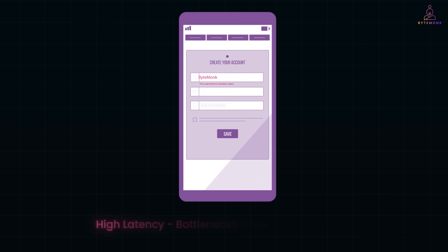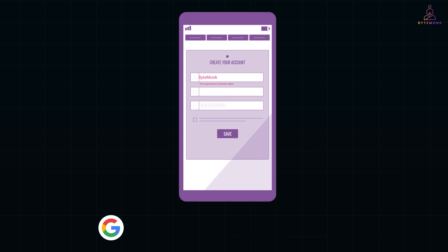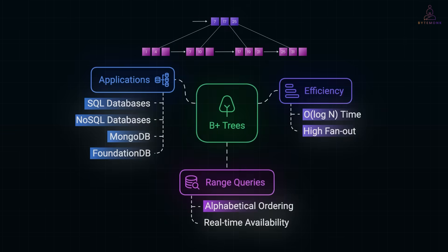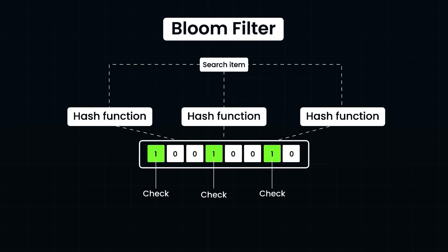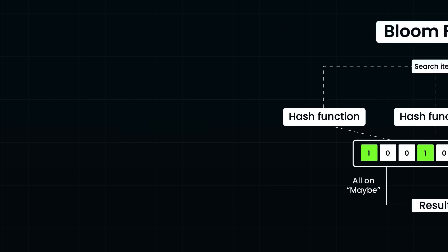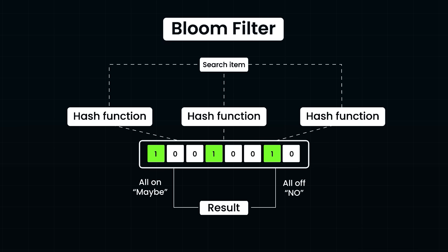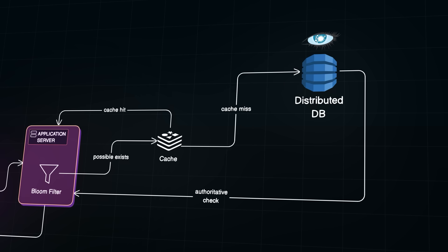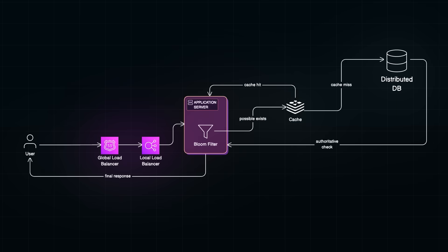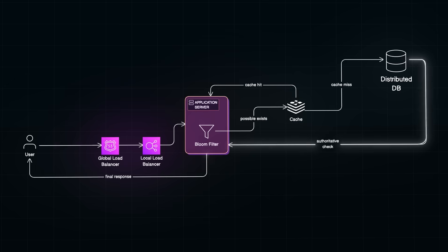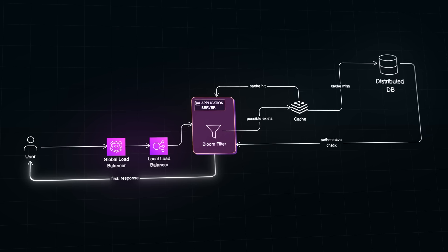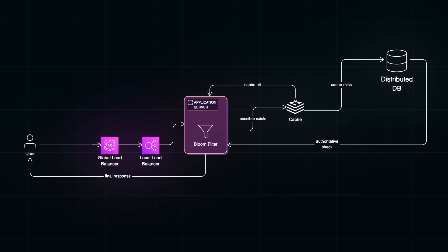High latency, bottlenecks and unnecessary load in the system. So, how do large-scale platforms like Google, Amazon and Meta solve this? In this video, we'll walk through the smart techniques they use — from in-memory data structures like bloom filters and hash tables to distributed databases like Cassandra and DynamoDB. We'll also see how caching layers and load balancing work together to make these checks incredibly fast and scalable. Let's get started.